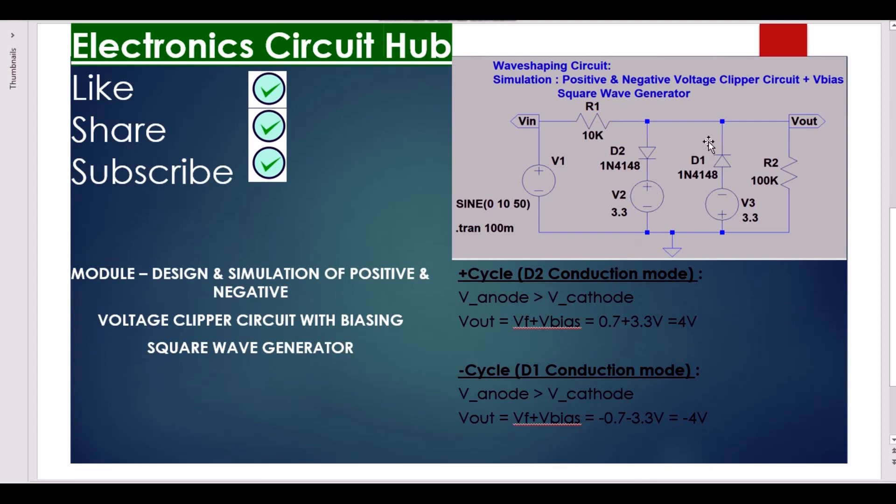And this circuit is a negative voltage clipper. Both positive and negative voltage clippers are combined together to generate a particular waveform, to generate a square wave. Let's see the behavior of this circuit.